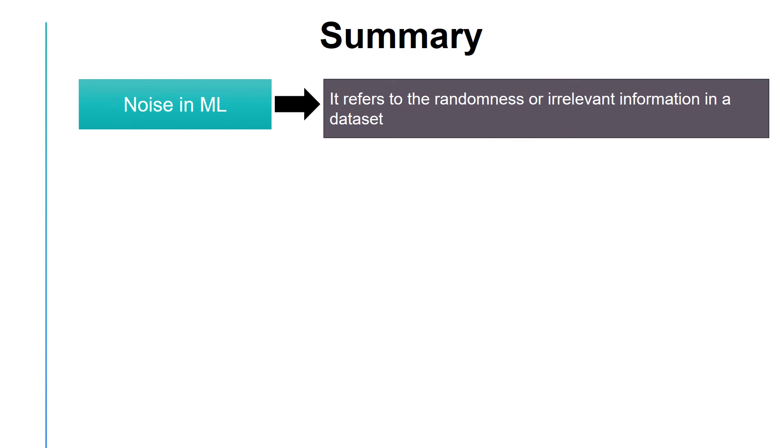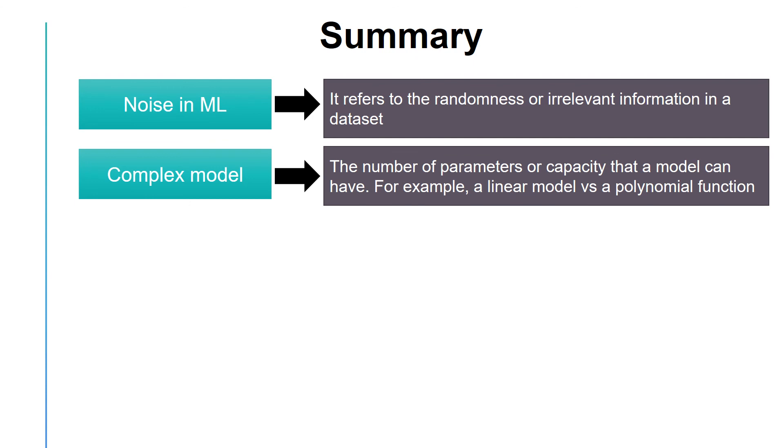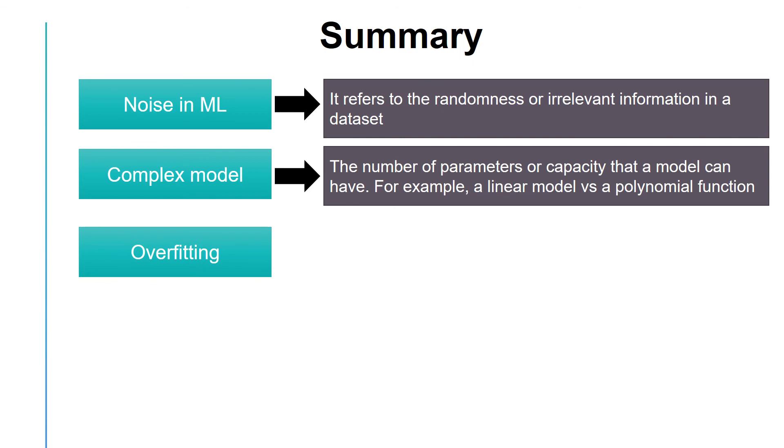To conclude, in this video, we first discussed the concept of noise or randomness in our training data. We talked about model complexity, which can be defined by the number of parameters or the flexibility of the model. For example, a linear model versus a polynomial model. We discussed the concept of overfitting, in which the model might start to fit to the noise in the input data.